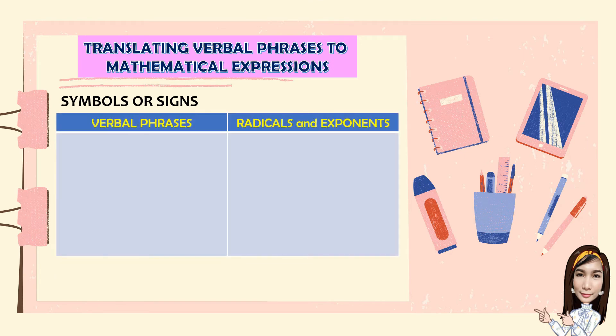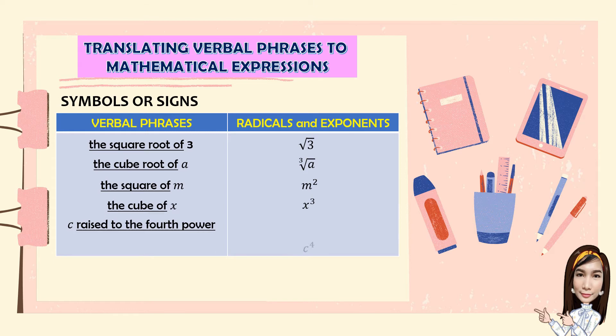The symbols or signs for radicals and exponents. The square root of 3, the cube root of A, the square of M, M squared, the cube of X, X cubed.